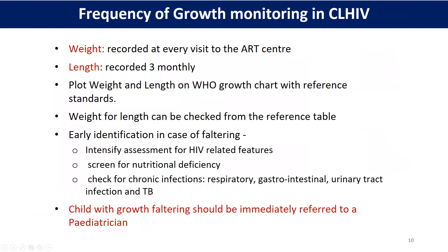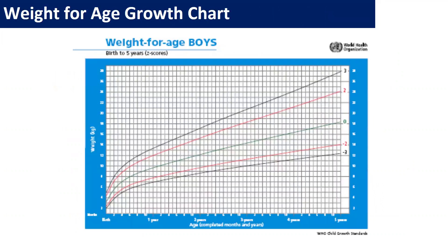To monitor growth, the parameters we assess are weight, length, and weight-for-length. For these, what we need is a growth chart. A growth chart is very, very important in pediatrics. In every OPD, we should have a growth chart and we should plot it. Every time the patient comes, we have to plot and see whether growth is normal — that is, parallel to the reference charts already there. The green line depicts normal growth, and the red line depicts faltered growth, which denotes something sinister is going on.